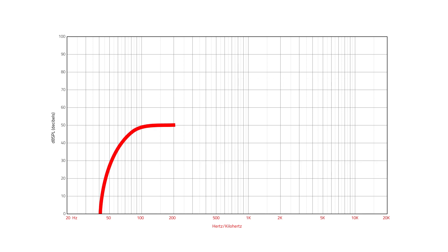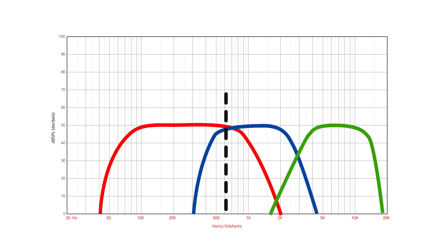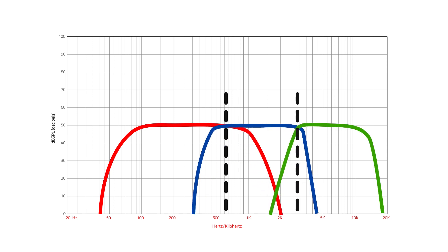In a three-way speaker, the speaker maker must use two different crossover frequencies — one between the woofer and mid-range, and another between the mid-range and tweeter. This means more parts and more cost. So sometimes, a two-way speaker might sound better than a three-way speaker in the same price range.